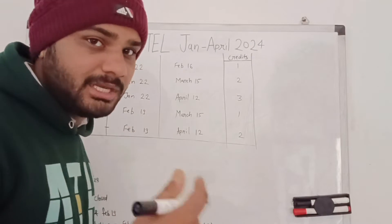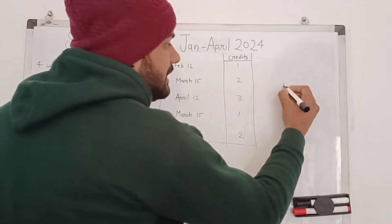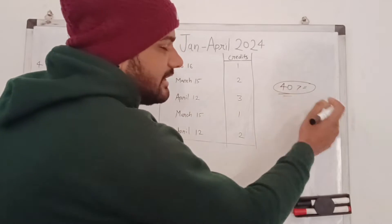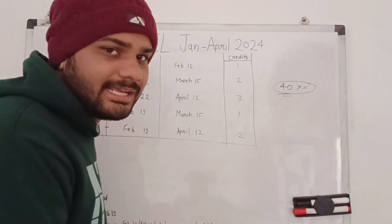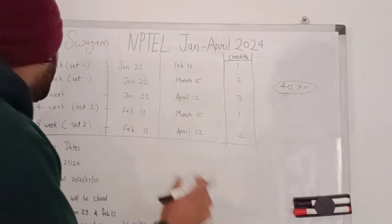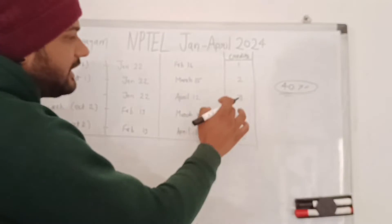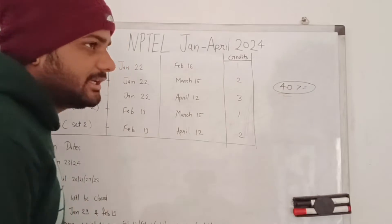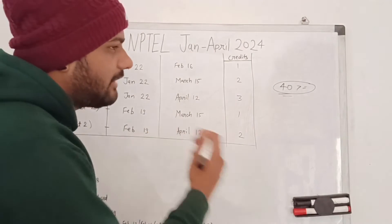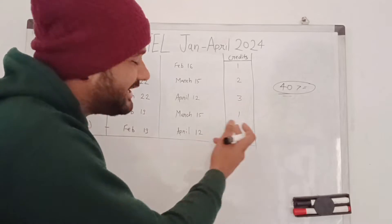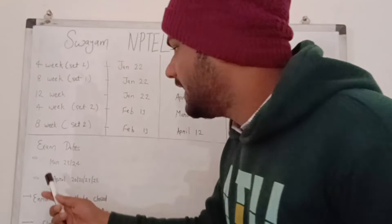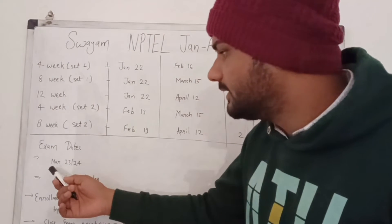The minimum marks for clearing any exam is 40 — it should be equal to or more than 40. If you get less than 40 you will fail and get no credit and no certificate. For the eight-week course you will get two credits, and for the twelve-week course you will get three credits. For Set 2, the four-week course gives one credit and the eight-week course gives two credits.